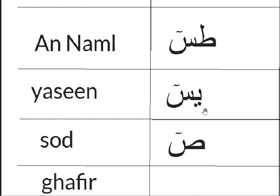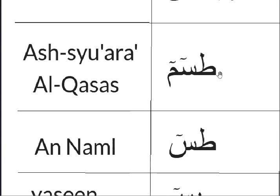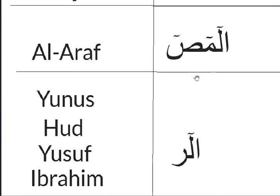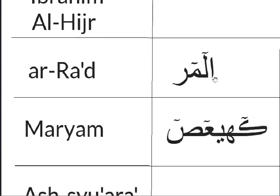For example: Ya — spelled Ya-Alif-Ya — 2 harakat. Ta — spelled Ta-Alif-Ta — 2 harakat. Ha — spelled Ha-Alif-Ya-Alif — 2 harakat. Ro — spelled Ro-Alif — 2 harakat. The rest are all 6 harakat.